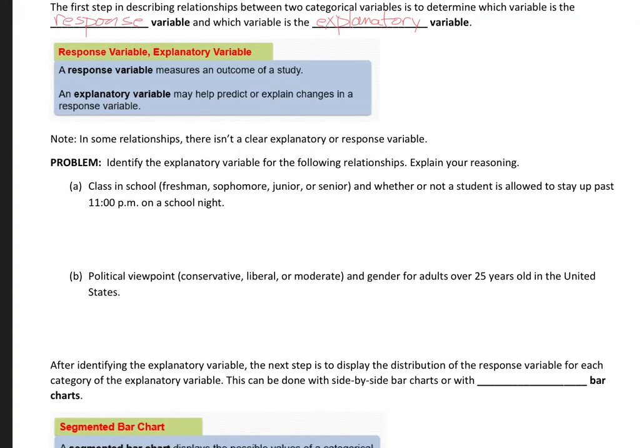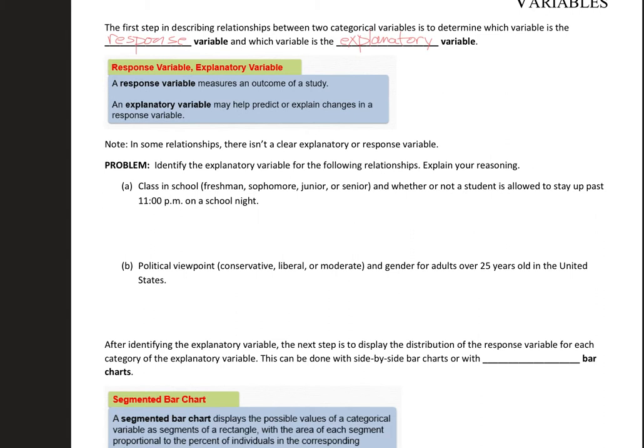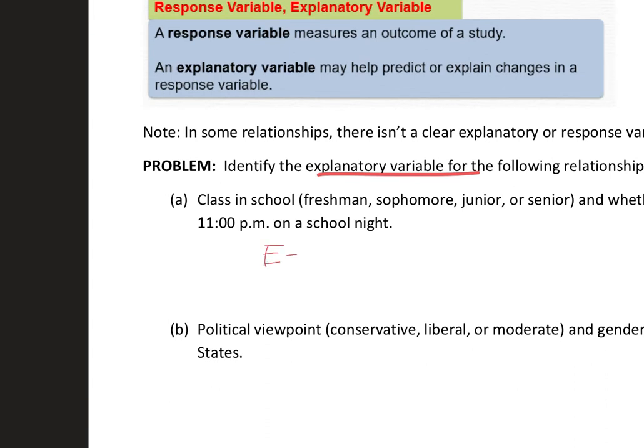Sometimes there isn't a clear one. For example, favorite color versus the day of the week — I don't really know if one's causing the other. That's kind of an odd example, but just thinking off the top of my head. Let's see if we can find one here — we want to identify the explanatory and response variable. I'm going to put an E and an R, one for explanatory and one for response, so we can have a label for each one.